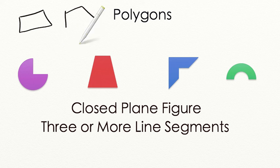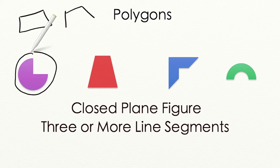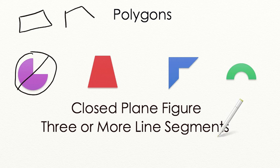Let's go through these four figures and decide which ones are polygons. Let's start with this figure here. This is a closed plane figure but look, part of the side is round. That means that it cannot be a polygon even though it has a few line segments in it. It has to be only made of line segments.